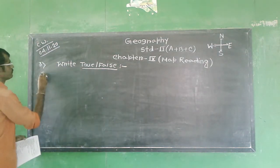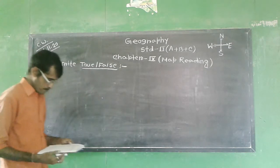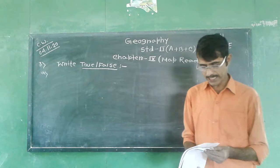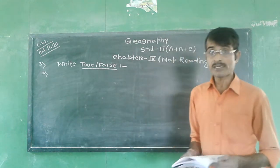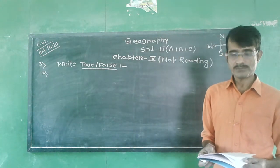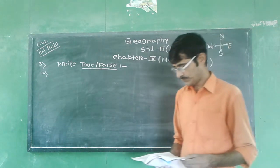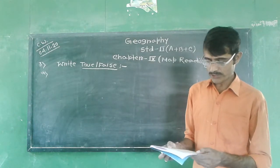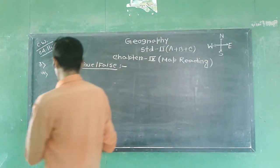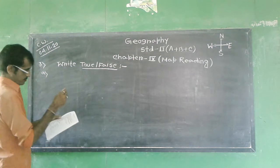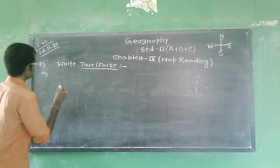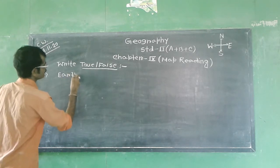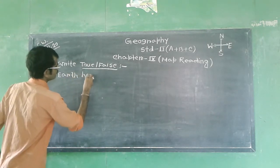A. Earth has 360 degree latitude. Is it the right statement? No, it is a wrong statement.